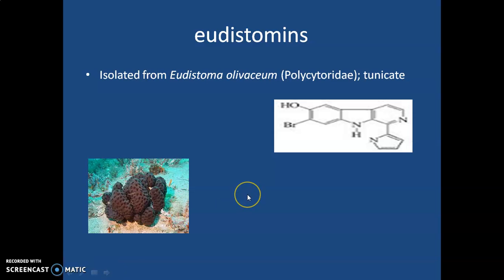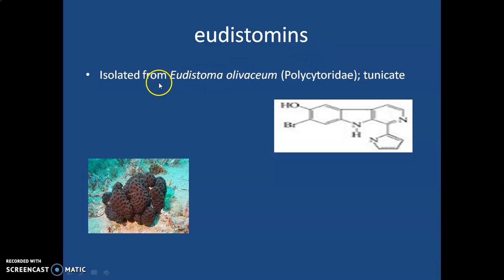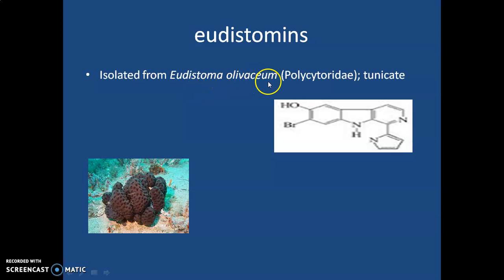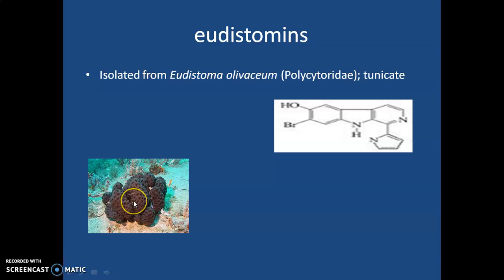The next compound is also obtained from another tunicate. Here you can see the structure of this compound, which is UDStomins. UDStomins is isolated from Ecteinascidia olivacea, which belongs to the family Polycitoridae. This organism is the source of this particular drug.